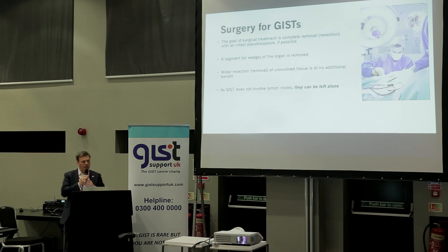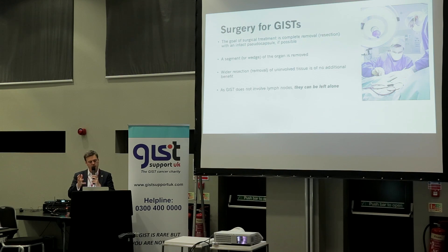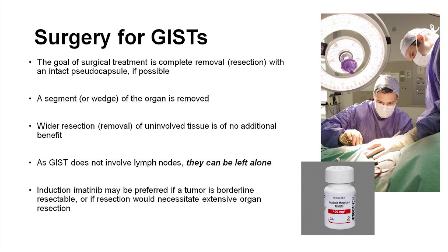The goal of surgery for a GIST is to completely remove the tumour — sometimes it has a pseudo-capsule around it. Generally you take a wedge of the organ; if it's on the stomach, you just take a little bit of the stomach. Unlike melanoma where we take a wide margin, with a GIST a wider resection doesn't really reduce the risk of recurrence — you want just enough tissue to get the tumour out. As GISTs don't spread to lymph nodes, you can leave them alone.